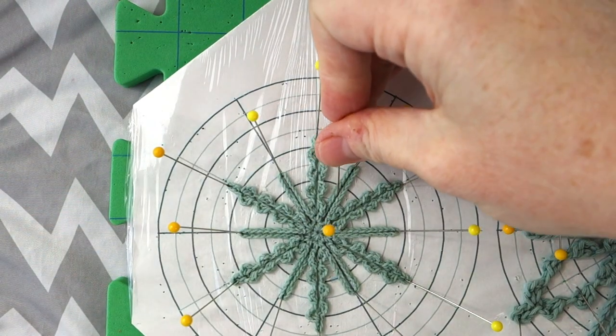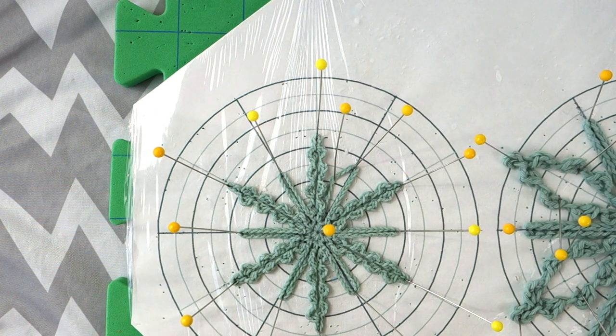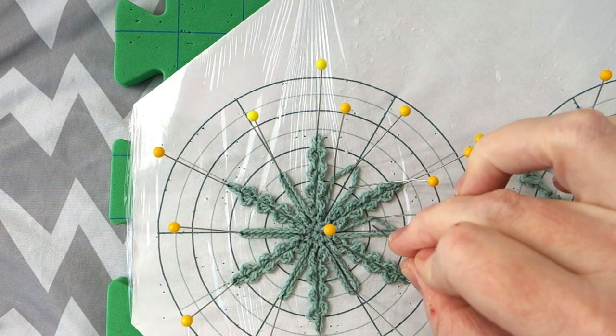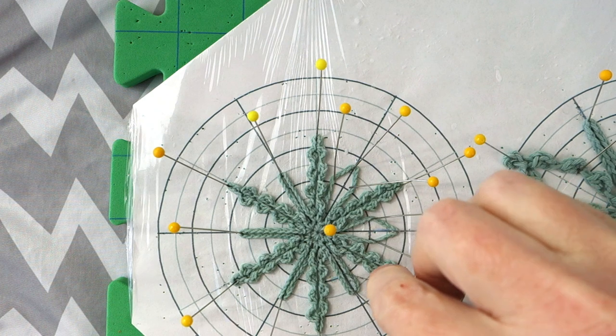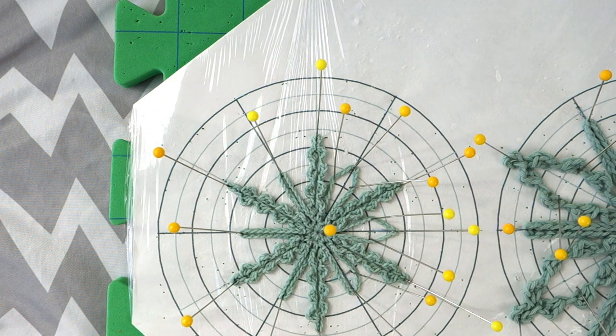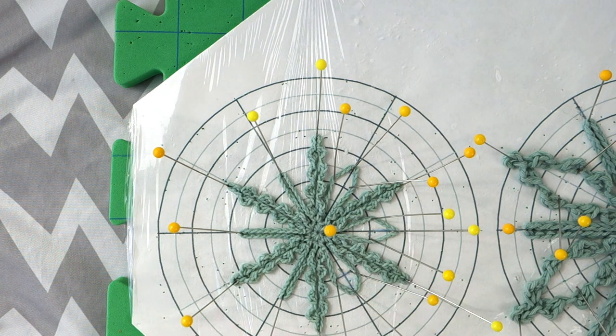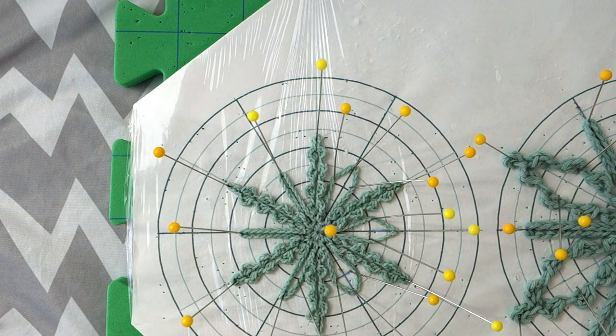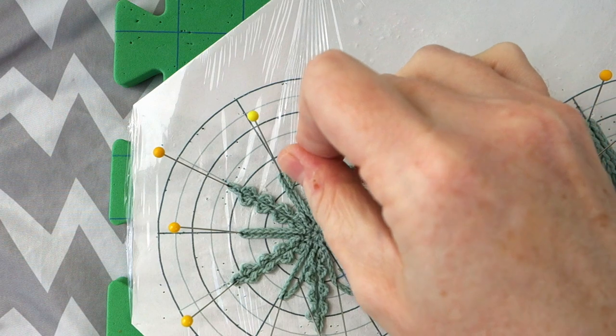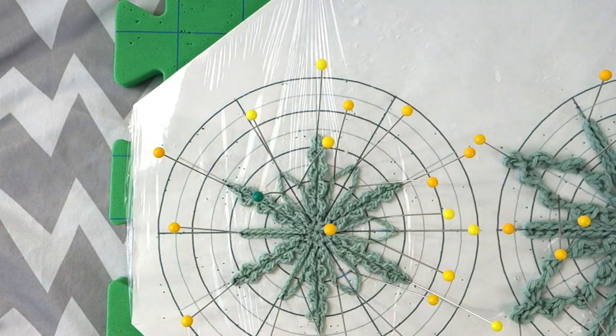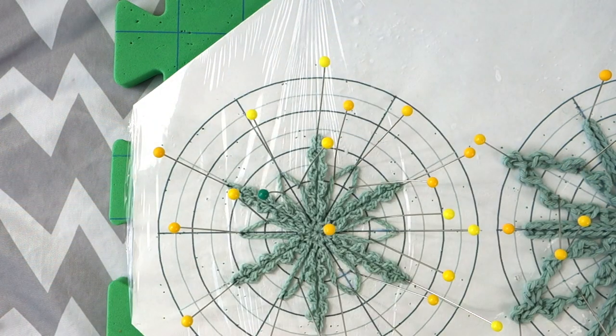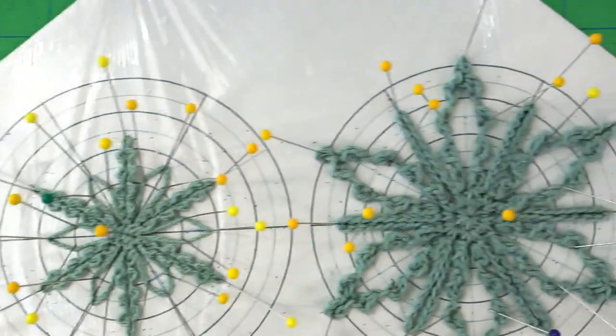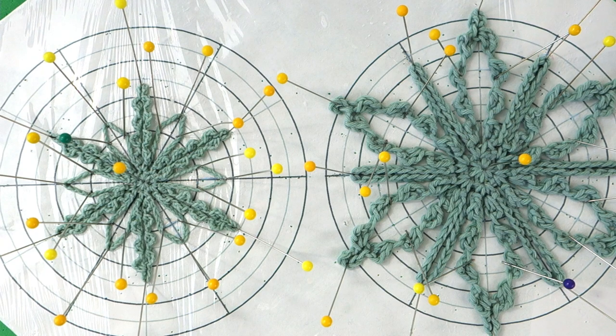But maybe we'll go back to the yarn, the thread one, and just open up these long loops on this one a bit. Just to show one more way to do it. That looks nice. And there are both of those two snowflakes pinned in. I'm going to remove the center one like I normally do.